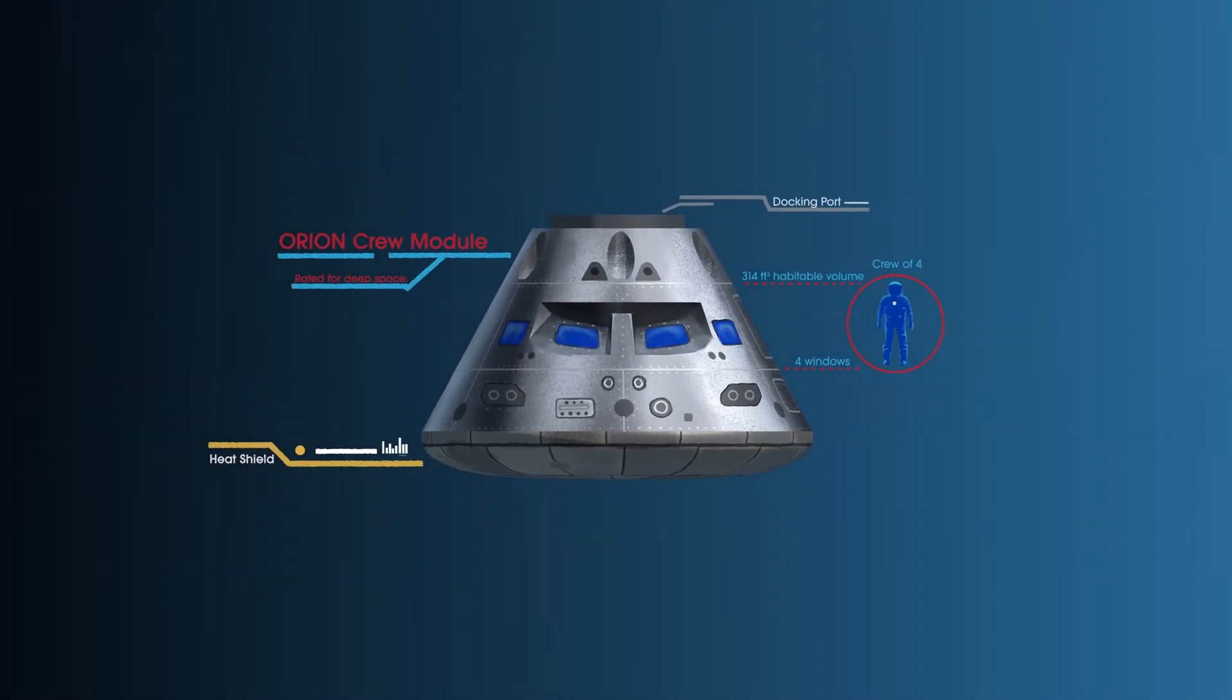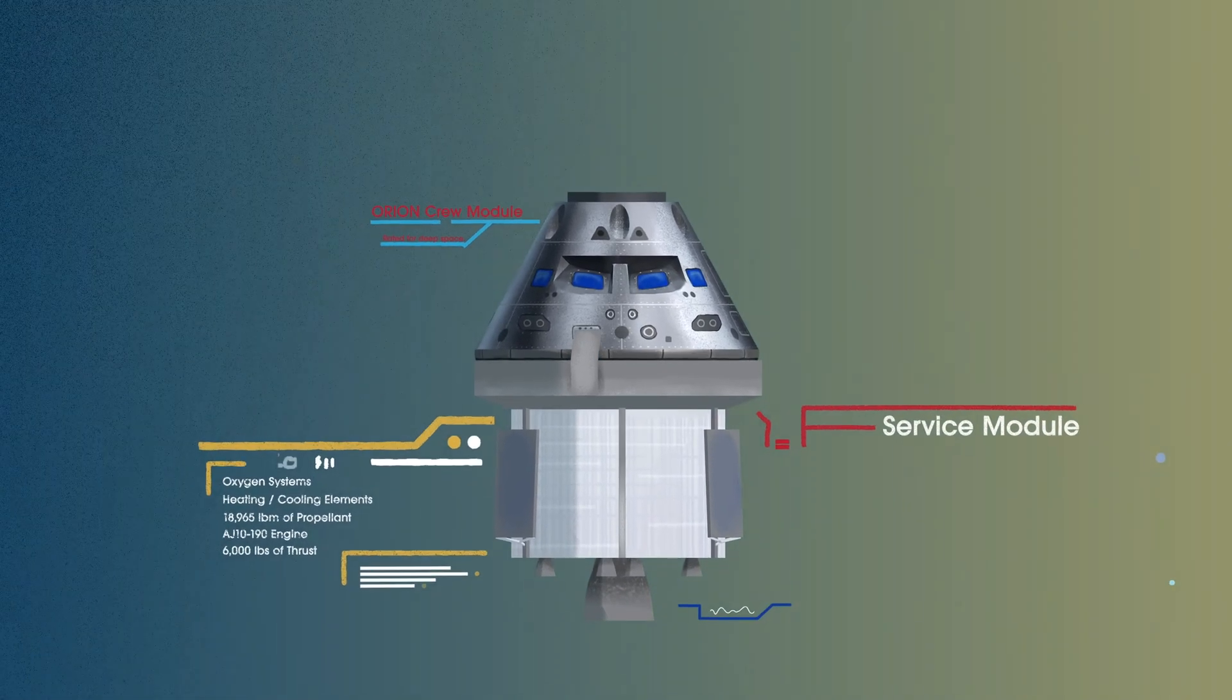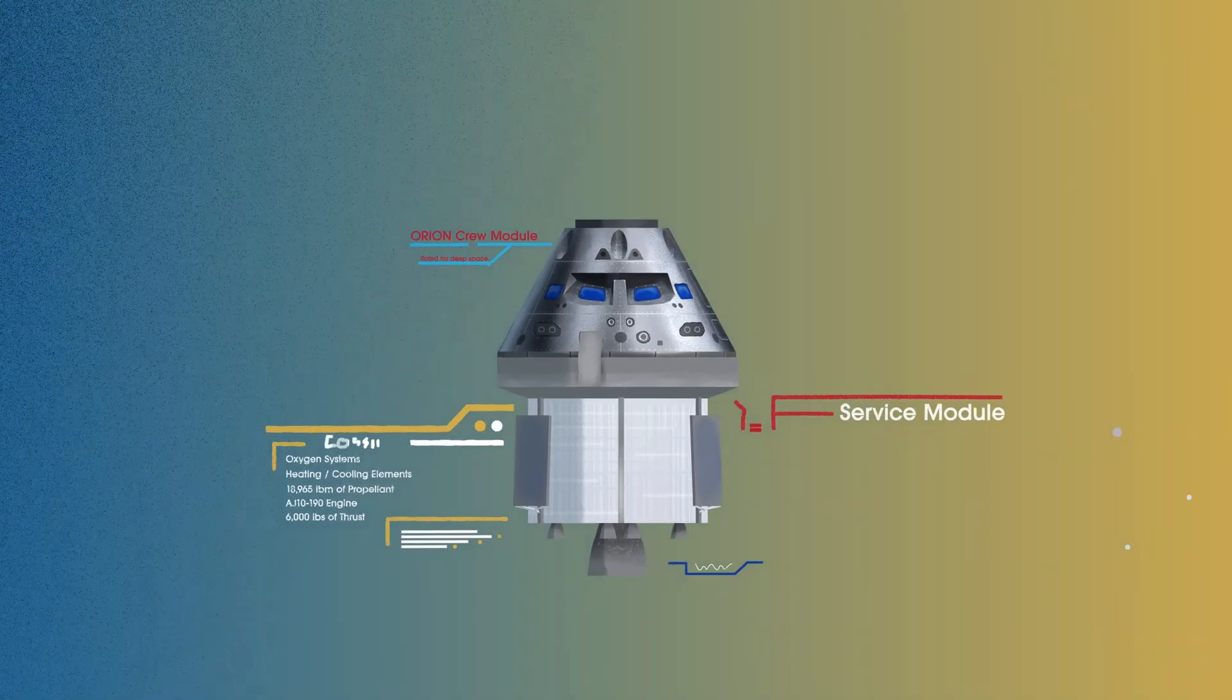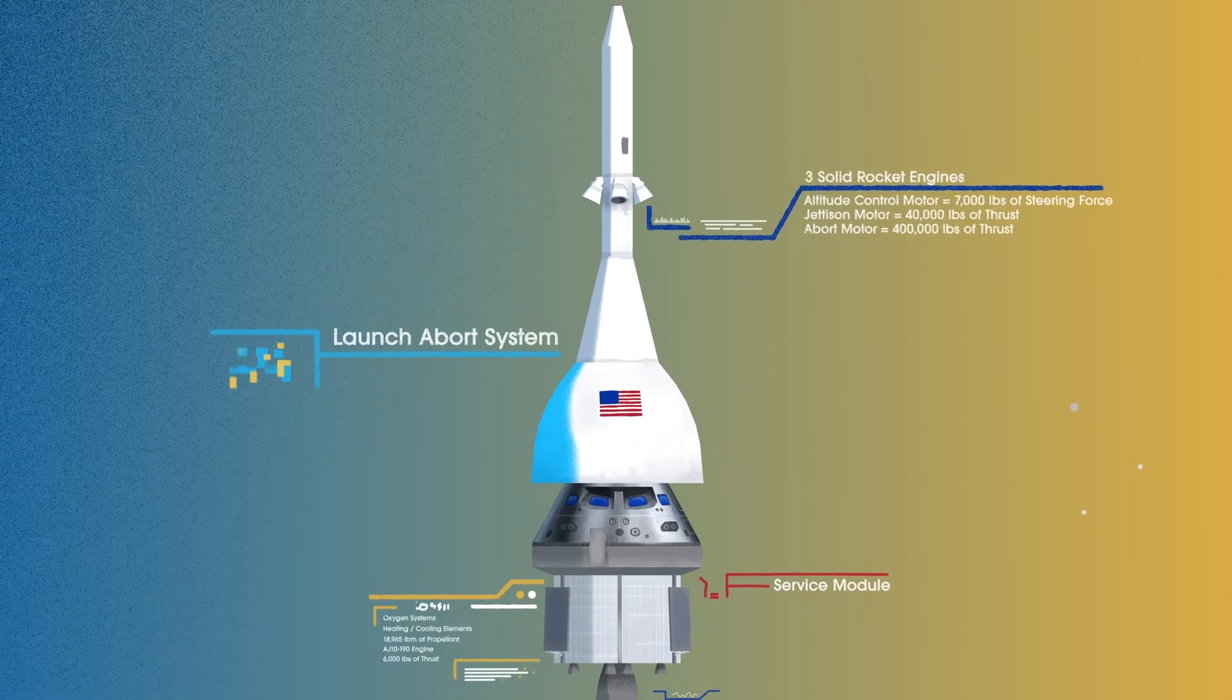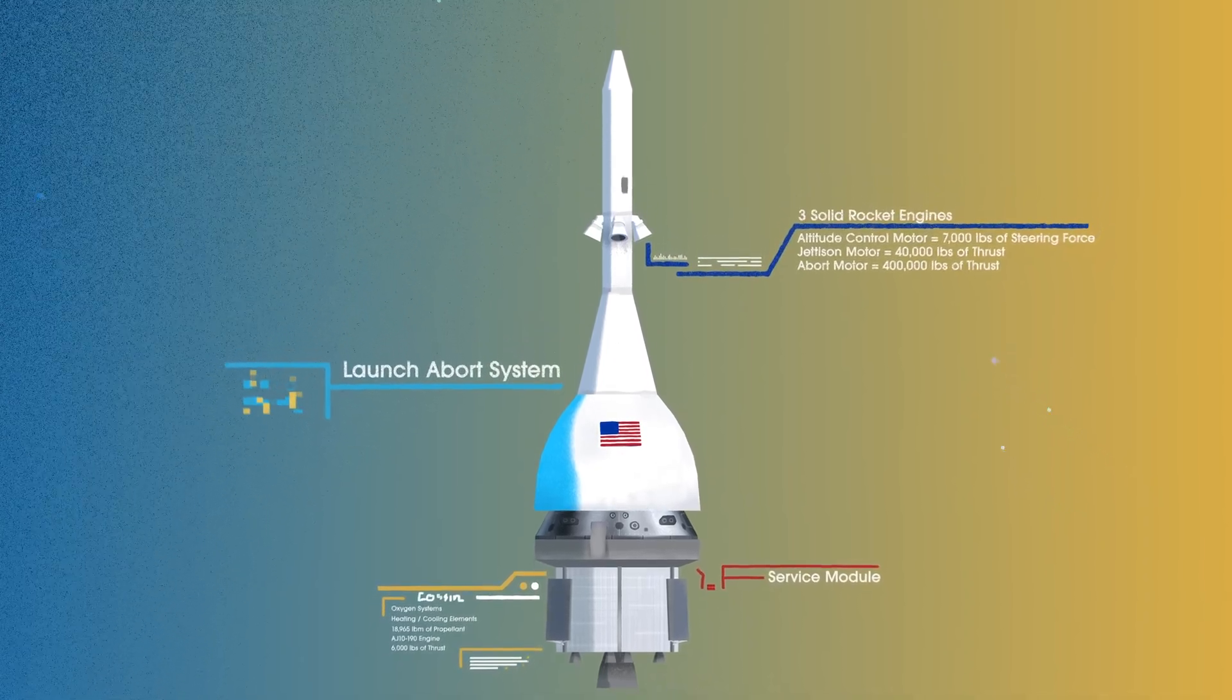The crew module, where up to four astronauts will live and work throughout the flight. The service module, with life-support systems for the crew and its own engine and fuel reserves, and a launch abort system, with engines capable of pulling the crew module to safety during launch should anything go wrong.